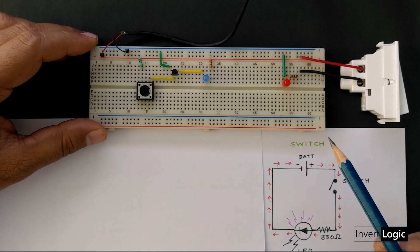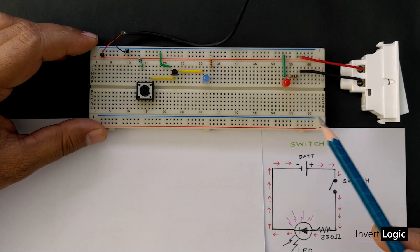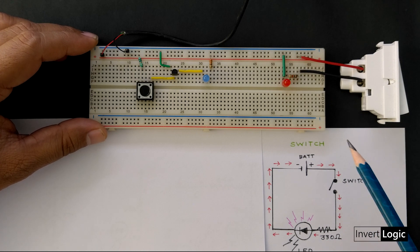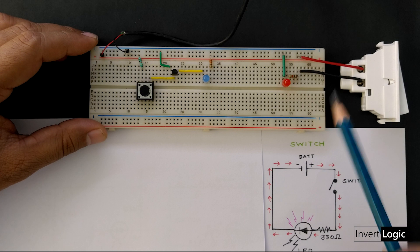Resistor is required to limit the current. Without the resistor, LED will burn instantly as there is nothing to stop or limit the current. We are using 330 ohm resistor here.